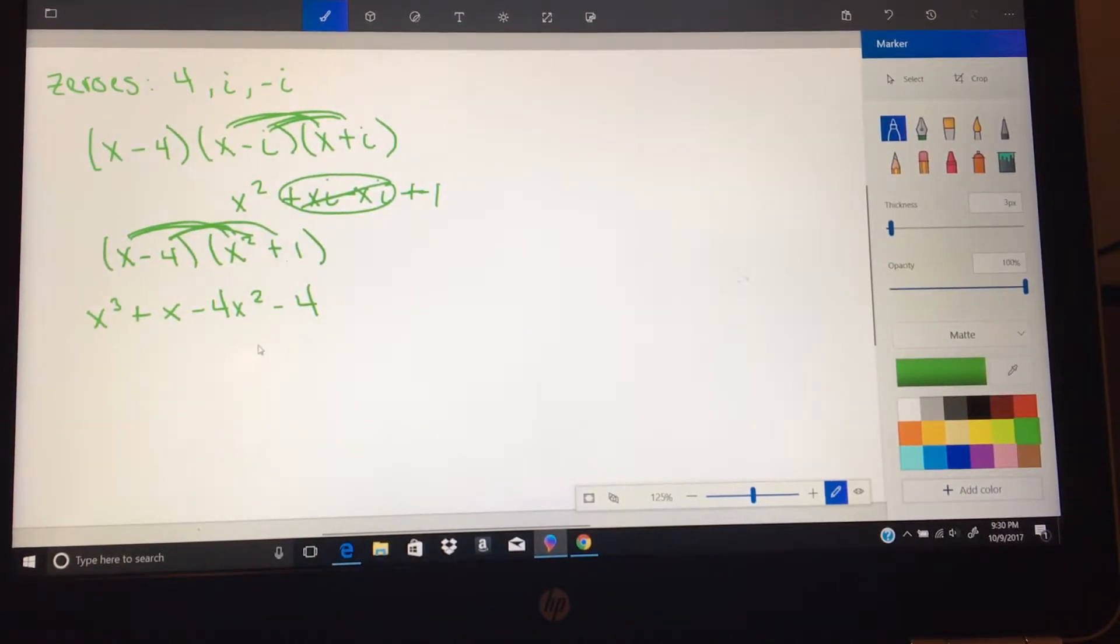Okay, so we have our polynomial function here. It's all multiplied out. Now I'm going to write this as p of x equals x cubed minus 4x squared plus x minus 4. So it's in the proper form. Now I have a condition, and that condition is that p of 1 is equal to negative 6.